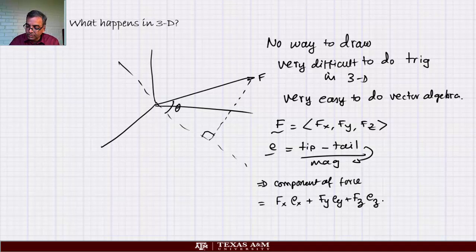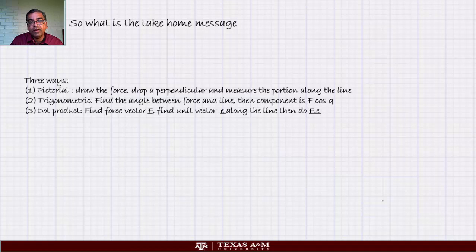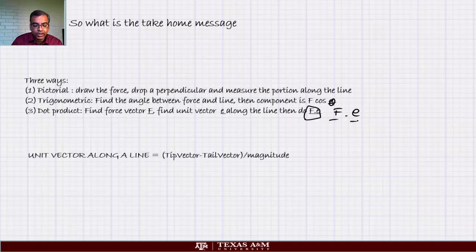So just to summarize, the take-home message is: there are three ways to do components of vectors. One: draw the force, drop a perpendicular, and measure the portion along the line. Two: trigonometric - find the angle between force and line, then component is F cos theta. Three: dot product - find the force vector, find unit vector E along the line, then do F dot E. Unit vector along the line is tip minus tail divided by magnitude. I hope you got this idea, thank you.